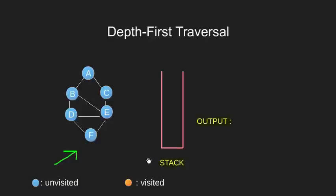Now let's start our algorithm with this starting vertex labeled A. We push it into our stack, print it as an output and mark it visited.